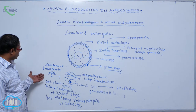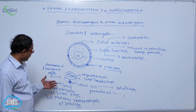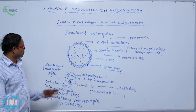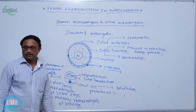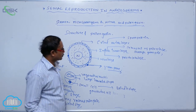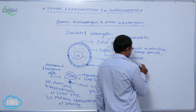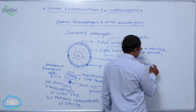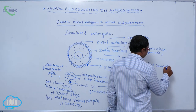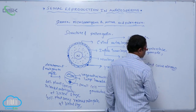In 40% of angiosperm species, the three cells are formed before pollination. Most angiosperms release pollen grains at the two-cellular stage. Some pollen grains cause allergy in human beings — such as asthma, bronchitis, and skin allergies.